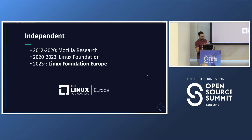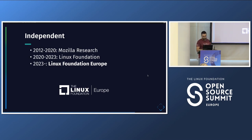Servo is an independent project. It started at Mozilla more than 10 years ago. In 2020, Mozilla laid off the whole team and the project was donated to the Linux Foundation. It was quiet for a couple of years. Since January, Igalia has started to maintain the project, and it moved to Linux Foundation Europe. No big corporation is behind it — the Technical Steering Committee takes all decisions, with external contributors, Igalia contributors, and former Mozilla developers still involved.